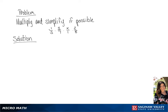We have the problem: negative 1 third times 3 sevenths times x over 1 times 2 eighths. We're going to simplify before we multiply.